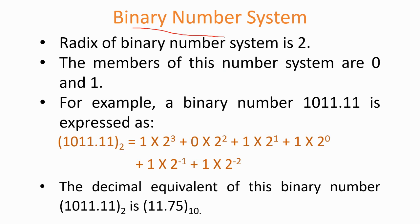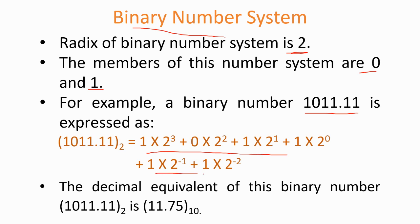The binary number system is what computers use, because a computer can understand only zeros and ones. The radix of the binary number system is 2 and its only digits are 0 and 1. For the example 1011.11, we represent starting from the decimal point as 2^0, 2^1, 2^2, 2^3 for the integer part, and 2^(-1), 2^(-2) for the fractional part.